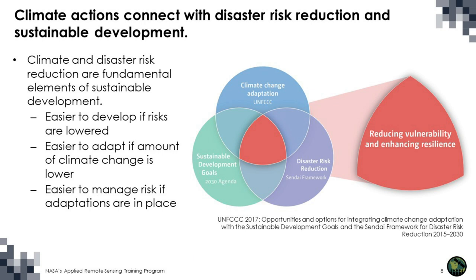It's also important to note that climate actions connect with disaster risk reduction and sustainable development. Climate and disaster risk reduction are fundamental elements of sustainable development itself, showing the synergies and trade-offs across all three areas. It is easier to develop if risks are lower, easier to adapt if the amount of climate change is reduced, and easier to manage risk if adaptations are in place. In the end, we're looking for this middle space: how do we reduce vulnerability and enhance resilience?